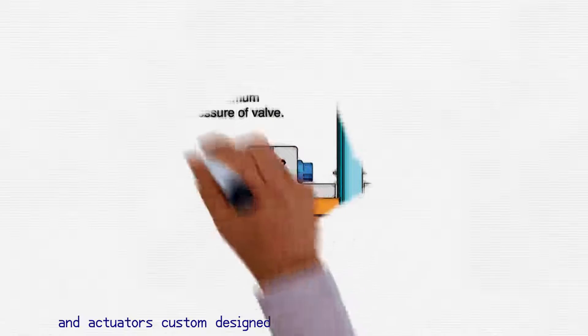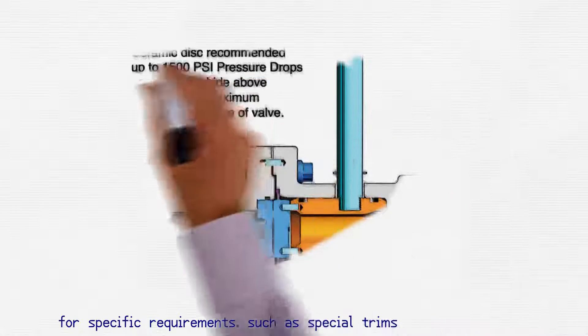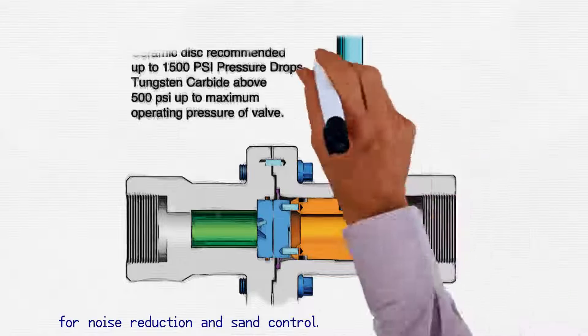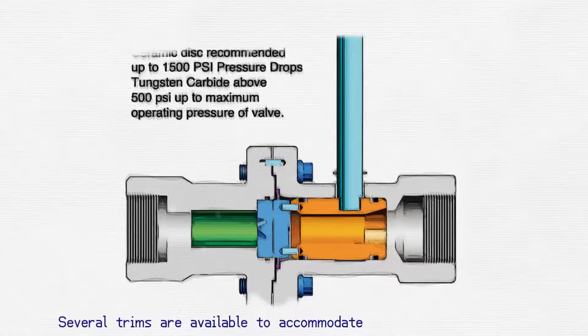Optional features. Choke valves can have trims and actuators custom designed for specific requirements, such as special trims for noise reduction and sand control. Several trims are available to accommodate high pressure flows or minimum pressure loss applications.